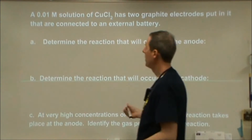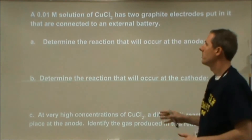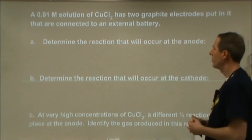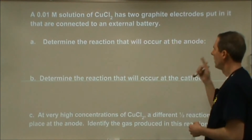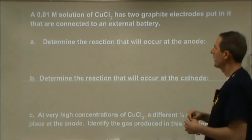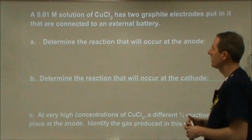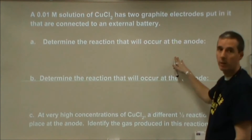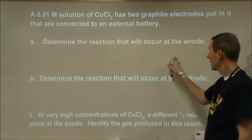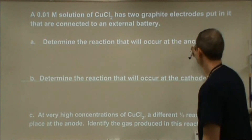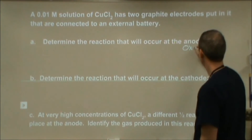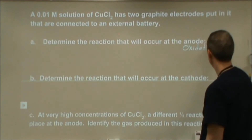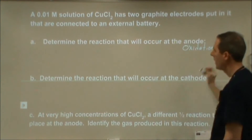Our problem says we have a 0.01 molar solution of copper chloride. Two graphite electrodes are connected to an external battery. We need to figure out which reaction will occur at the anode — translating that, we should think about what will be oxidized, what will be the oxidation half-reaction.